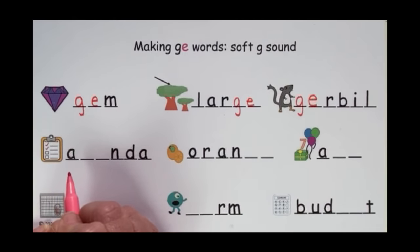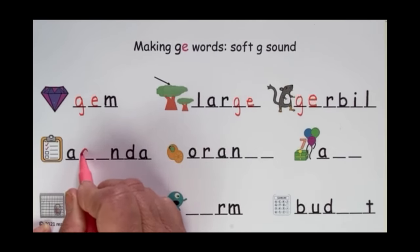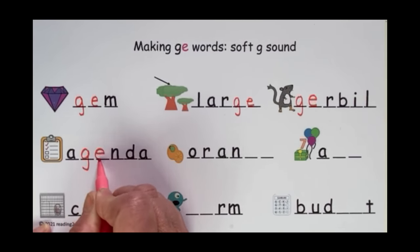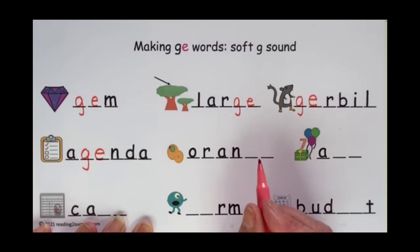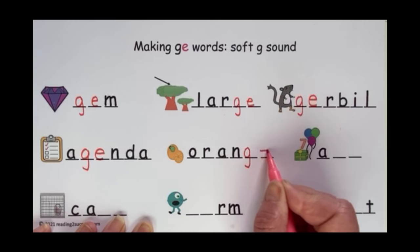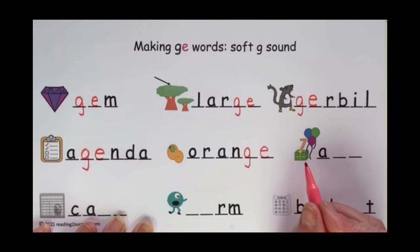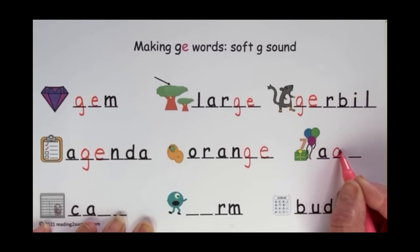This is an agenda. An agenda tells the daily activities. So we're going to put a G-E for the soft G in here — agenda. Now we're going to move to the next picture: an orange. The soft G is at the end, and we're going to make it by placing the two letters G-E here — orange. This is a picture of balloons, a present, and the number seven — it looks like a birthday party. This word represents age. The age is seven. We're going to put the soft G in here with the two letters G-E — age.